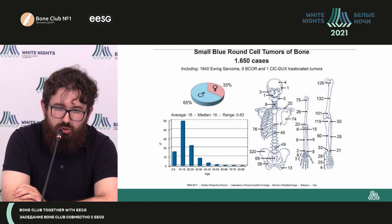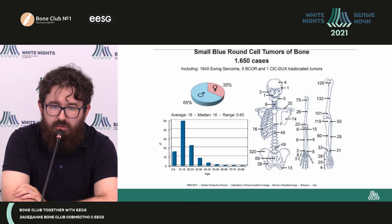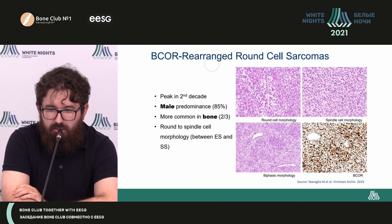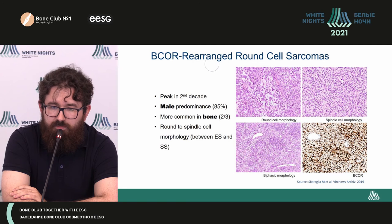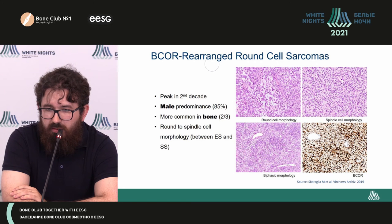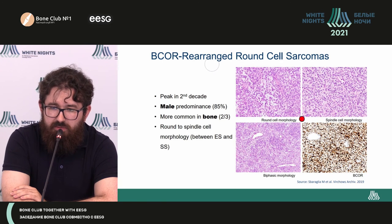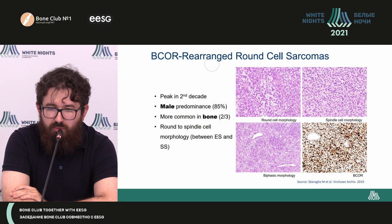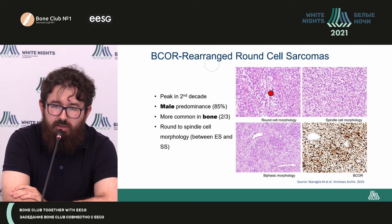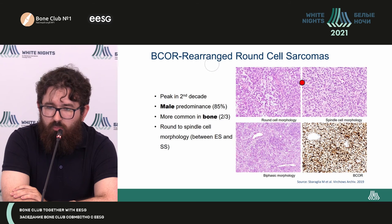You can see epidemiology of this particular tumor type from the Avetsul Institute. It usually occurs in male patients with a median age of 16 years, and localization is variable. This slide shows the spectrum of morphological patterns observable in BCOR-rearranged round cell sarcomas: round cell morphology — as we saw in the primary tumor — spindle cell morphology, and biphasic morphology.